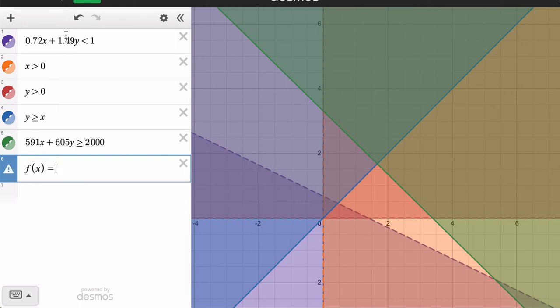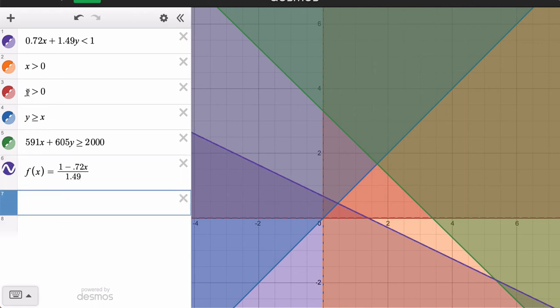And f of x is y. So I'm just going to isolate y in this first inequality, but I'm going to treat it like an equality. So I'm going to get y by itself. I'm going to subtract 0.72x from 1. So 1 minus 0.72x. And I want to get y by itself, divide everything by 1.49. So now, and you'll see where this is going in a moment. Then I want y values greater than 0. So this is my first function, f1.